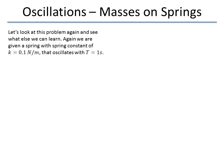We'll look at that problem again. This is the previous problem we solved with the 1.1 Newton per meter spring constant that oscillates at one second. We know that it has a mass of four kilograms.